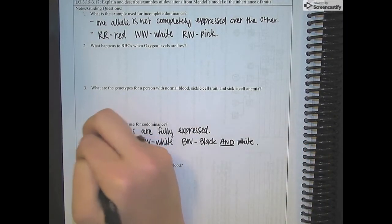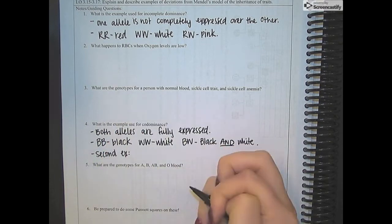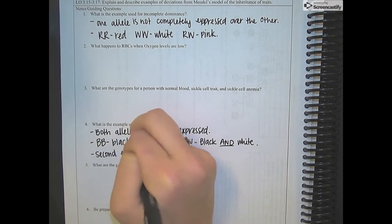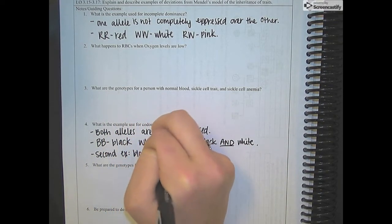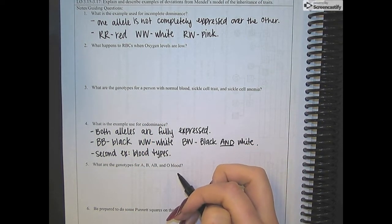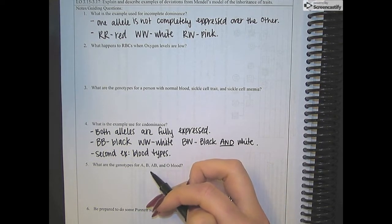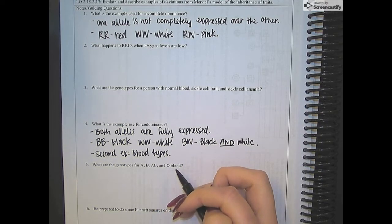The second example, I'm going to talk about our blood types. So I'll go ahead and move on to number five. We're talking about the genotypes for A-type blood, B-type blood, AB-type blood, and O-type blood.